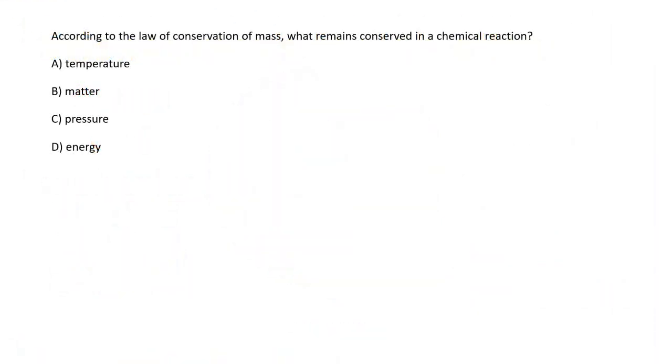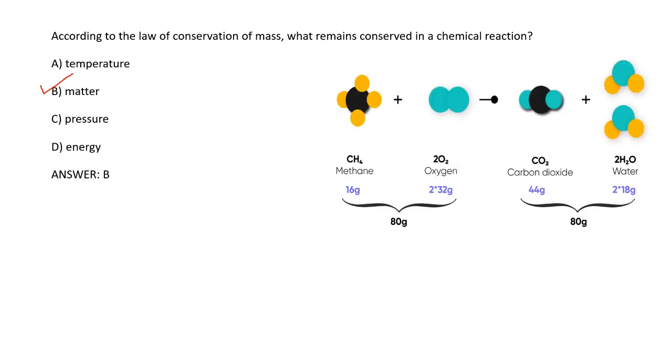Our first question is: according to the law of conservation of mass, what remains conserved in a chemical reaction? So option B is your right answer, that is matter. Matter is the same before the chemical reaction and after the chemical reaction.